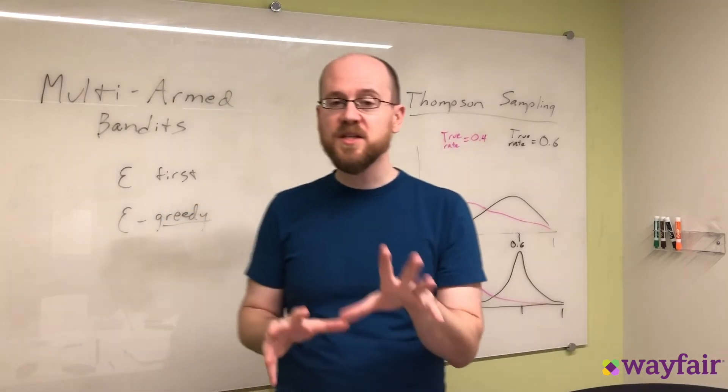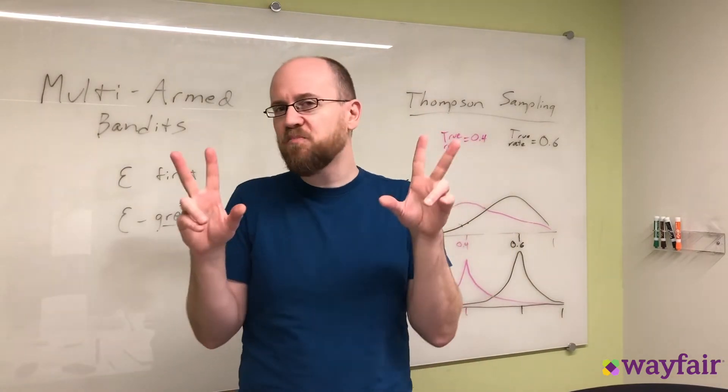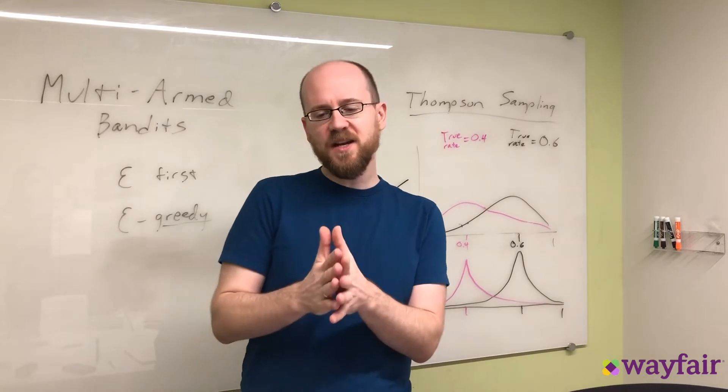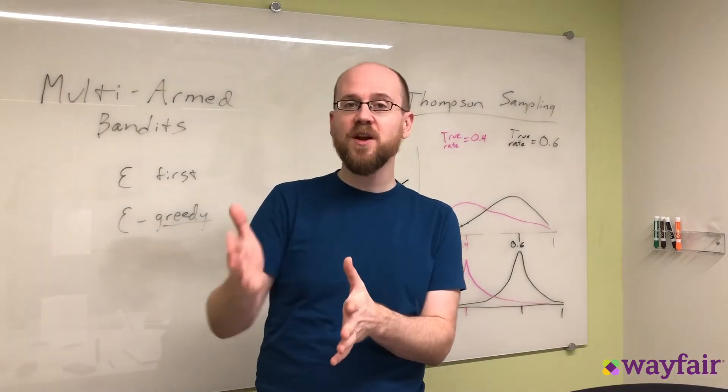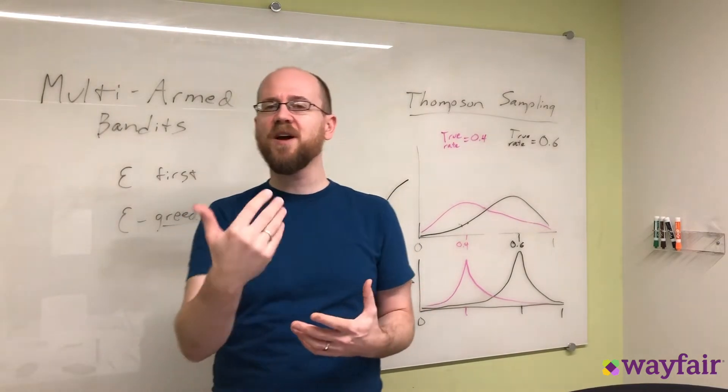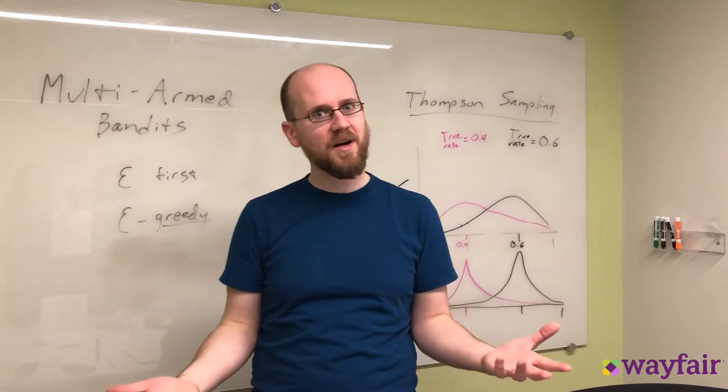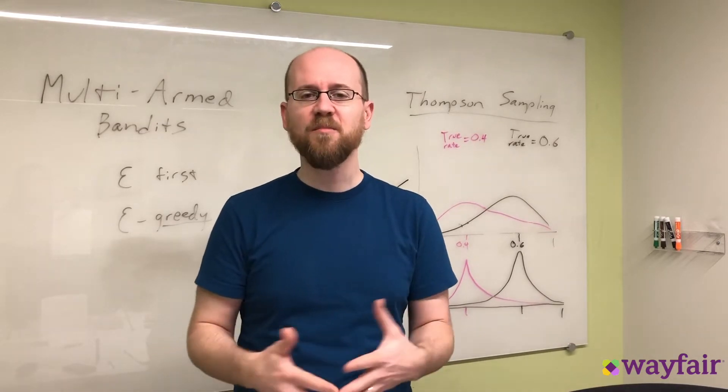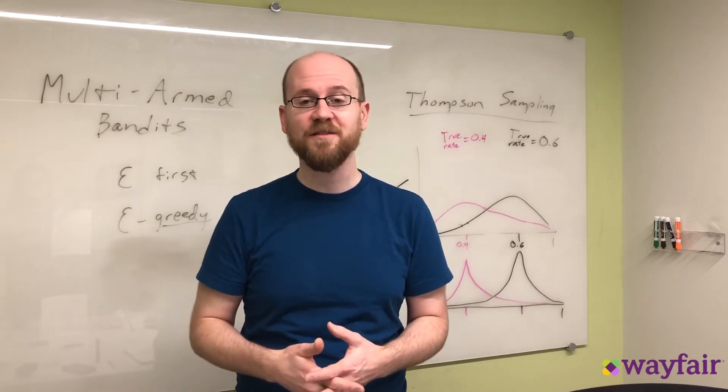Now, this feedback component is key. Because we get to play each one of these one-armed bandits, we get information about the true rate of return, sort of incremental information, but we get a lot of it. Especially if we have a lot of customers, like you do at an e-commerce site, or a lot of visitors, I guess I should say. But at Wayfair, we have a lot of customers as well.